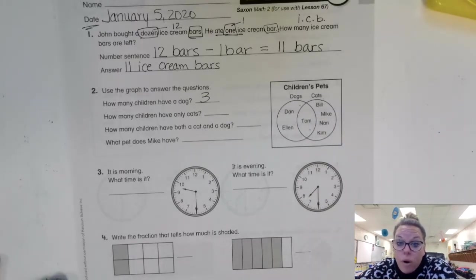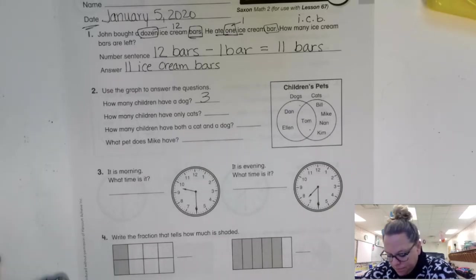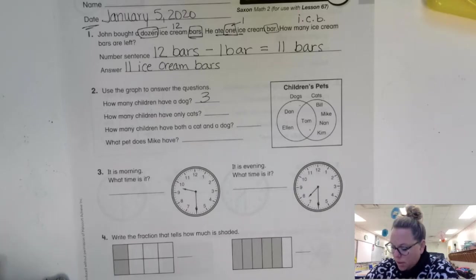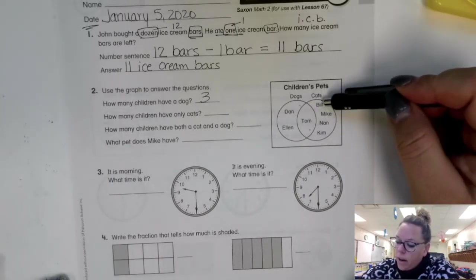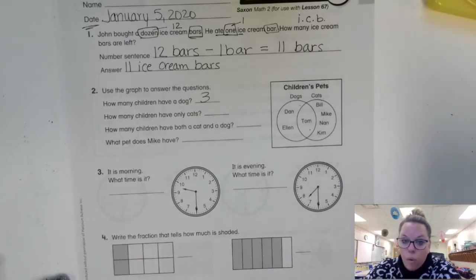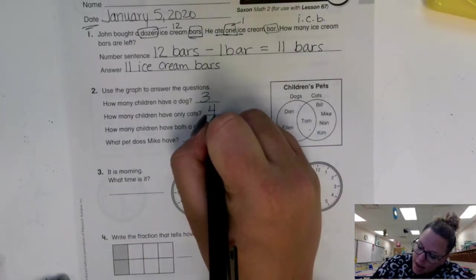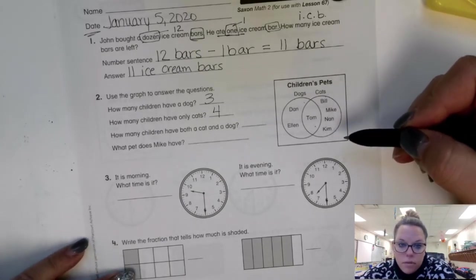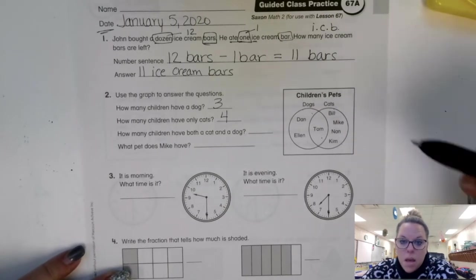How many children have only cats? Only cats. So since I want only cats, I have to look over here. One, two, three, four. Only cats. I cannot count the middle because only means there's no dogs involved.